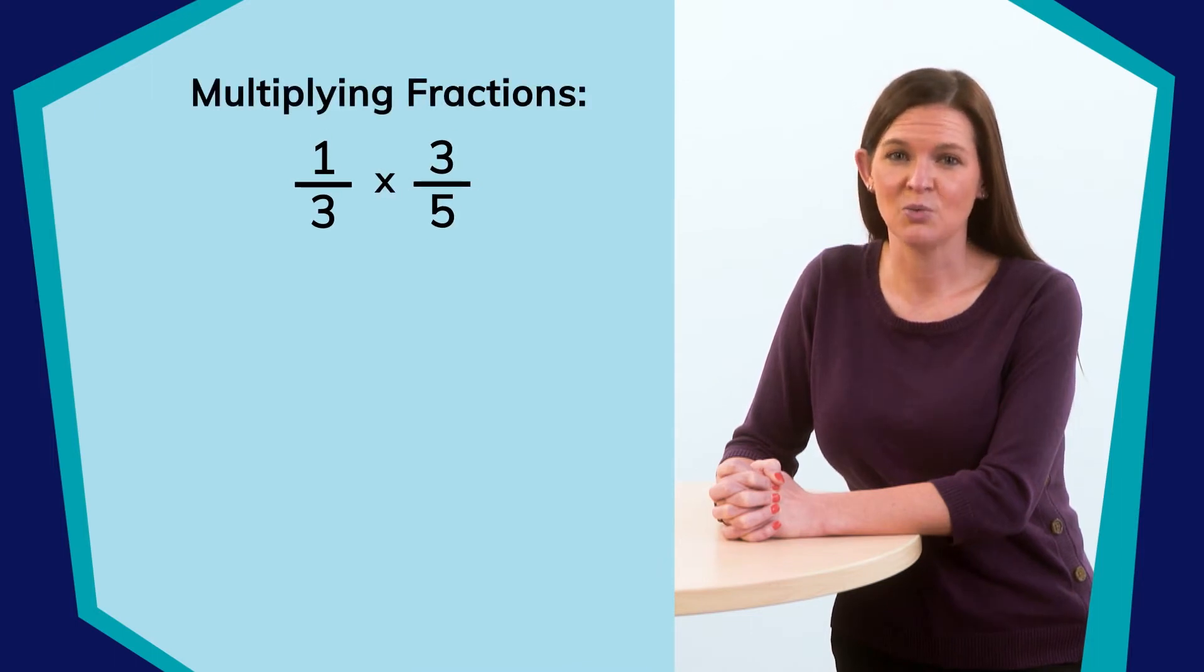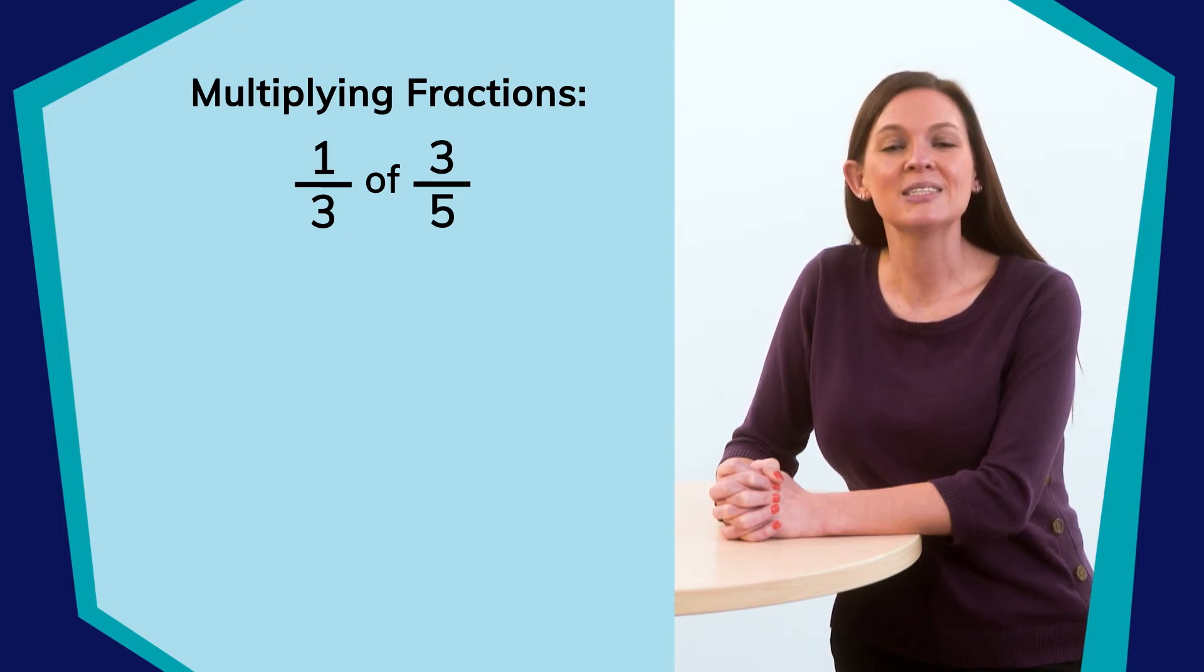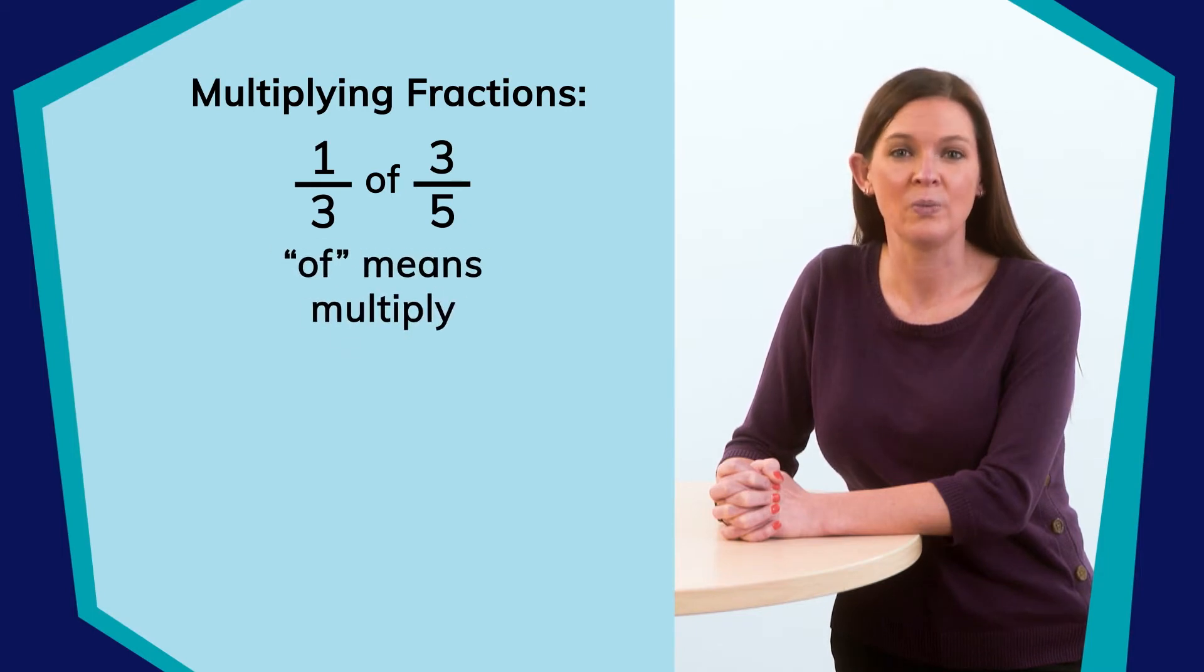For our demonstration, let us choose one-third times three-fifths. We could also say one-third of three-fifths. What does that mean, one-third of three-fifths? Yes, it means that I need one-third of three-fifths of a whole. So what would that look like as a model?